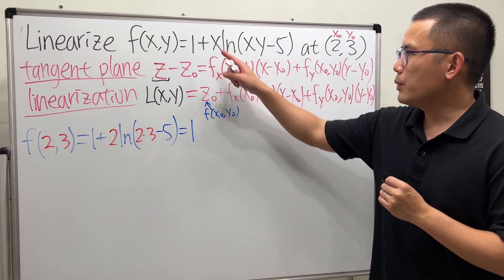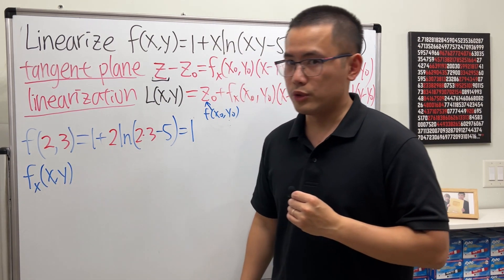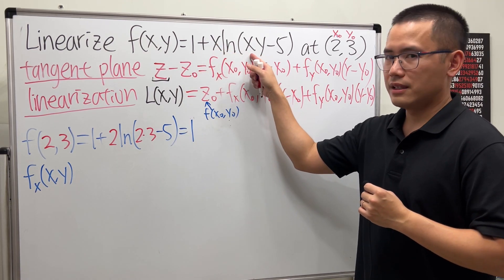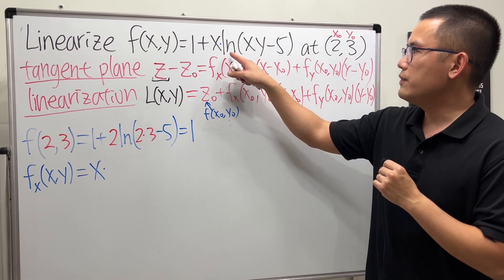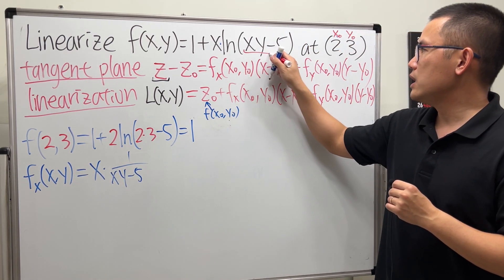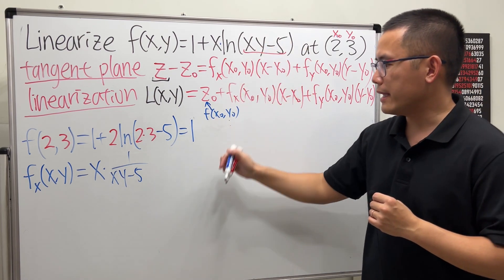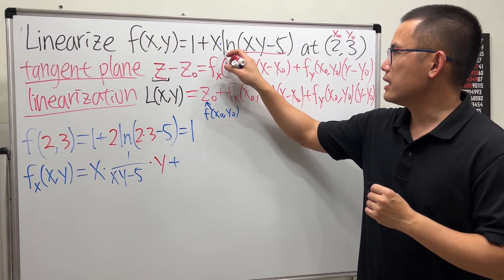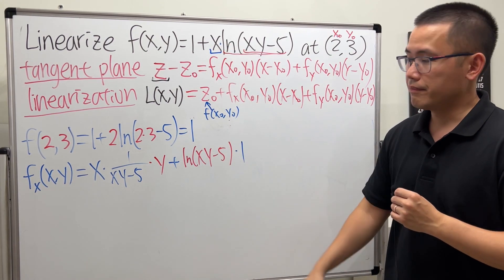Now let's find f_x, the partial derivative with respect to x, treating x as the variable. We have x on the outside and also x inside ln(xy − 5), so we must use the product rule. Keep the first function x times the derivative of the second: 1 over (xy − 5) times y (chain rule gives y). Plus ln(xy − 5) times the derivative of x, which is 1.